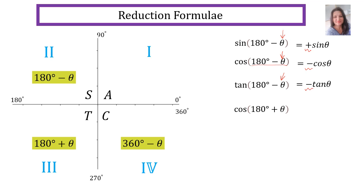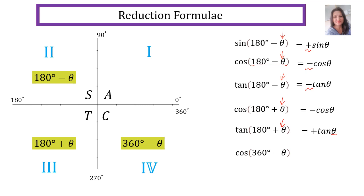Cos(180° + θ) reduces to negative cos theta, because cos is negative in the third quadrant. Tan(180° + θ) becomes positive tan theta, because the 180 plus quadrant is tan's quadrant. When I give you cos(360° − θ), it reduces to plus cos theta, because the 360 minus theta quadrant is cos's quadrant, so it is positive there.